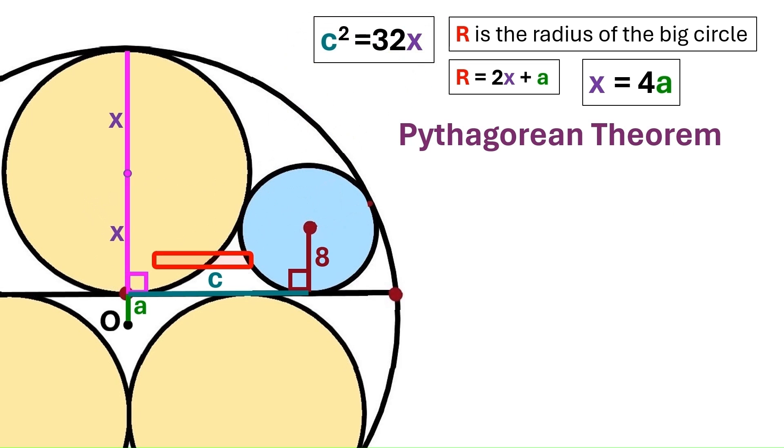Let's clean this diagram, and let's draw a radius for the big circle here. And let's label it with a capital R. And this distance over here is 8, because it's the radius of the blue circle. That means this distance is capital R minus 8. Next, we take this distance c and project it down here.